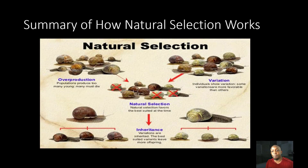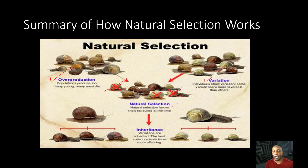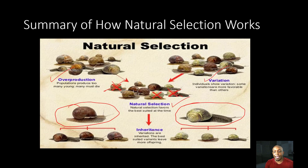Let's quickly summarize those four key principles and show how natural selection works. First, overproduction — populations produce too many young and many must die, so some will make it and some will not. Then variations — individuals show variations, and some variations are more favorable than others, so favorable variations are passed on while others will not make it. Then natural selection favors the best suited at the time — the organisms best suited to their environment are the ones that survive, i.e. survival of the fittest. And in inheritance, variations are inherited; the best suited variants leave more offspring, and since their genes are passed from generation to the next, their offspring more than likely will have a better chance to survive and adapt to their changing environment.